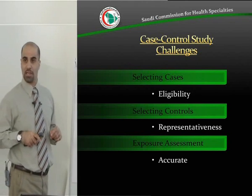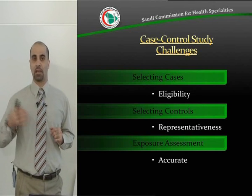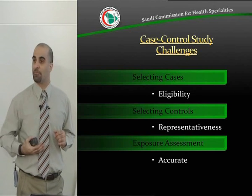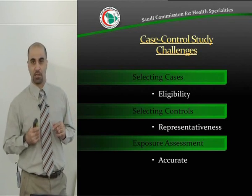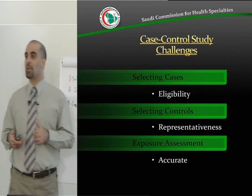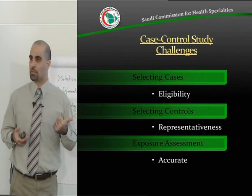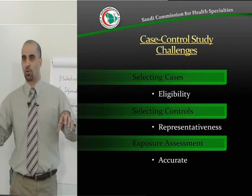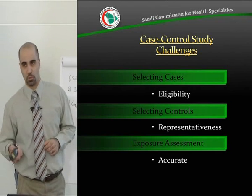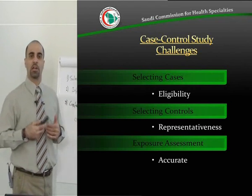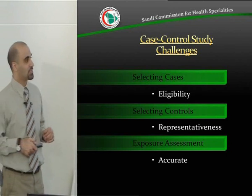Selecting the controls is even more important. You must select representative controls — not very healthy and not very sick. They must be representative of the population. For example, you can use neighborhood controls: if you take a person with cancer from a certain community, you take their neighbor to ensure comparability. You can also use hospital controls or next-of-kin controls. There are many ways to select controls, but it's essential to select the proper set.